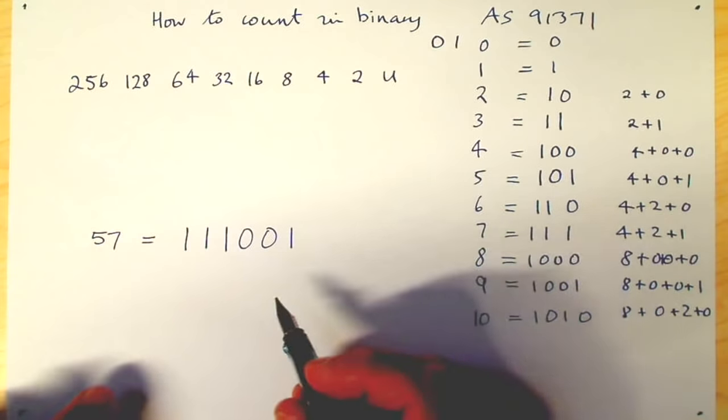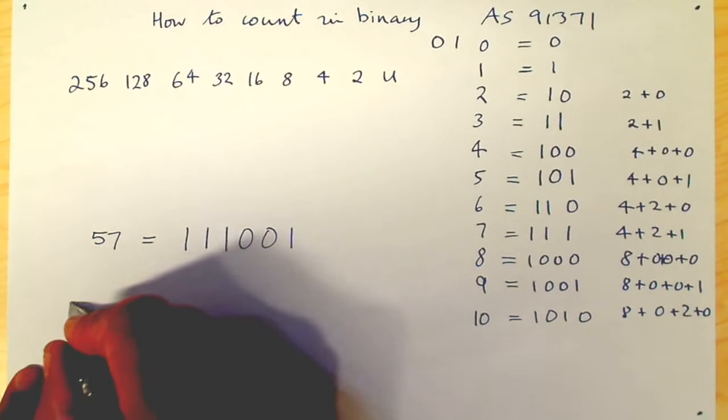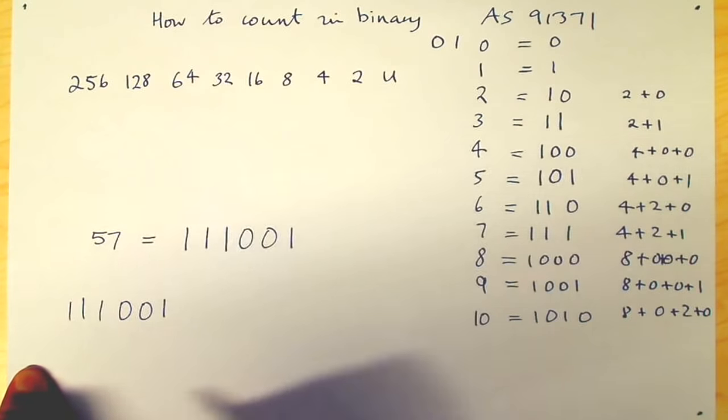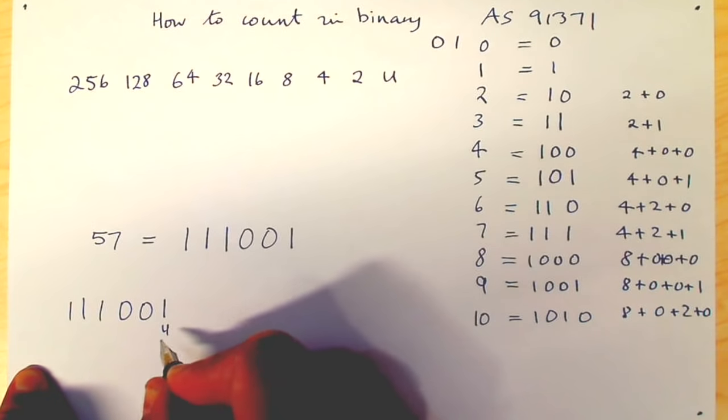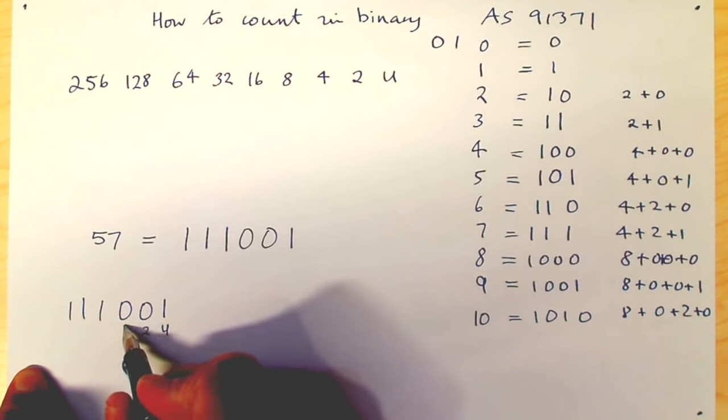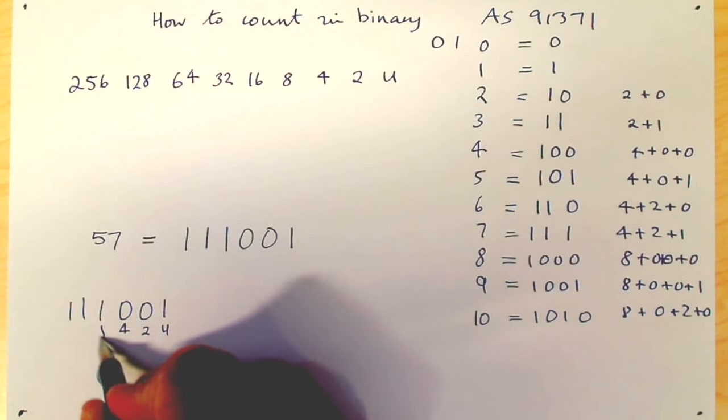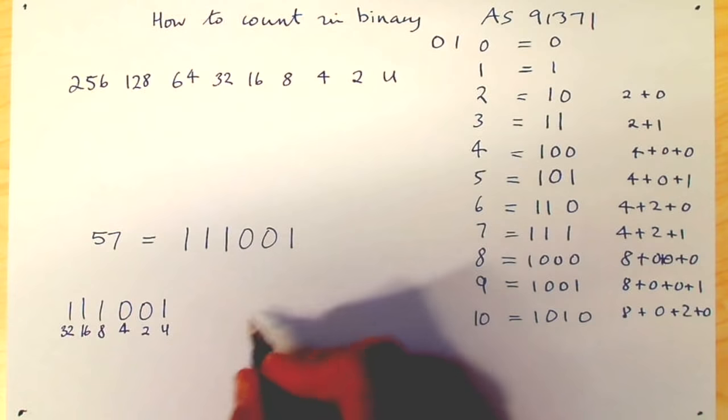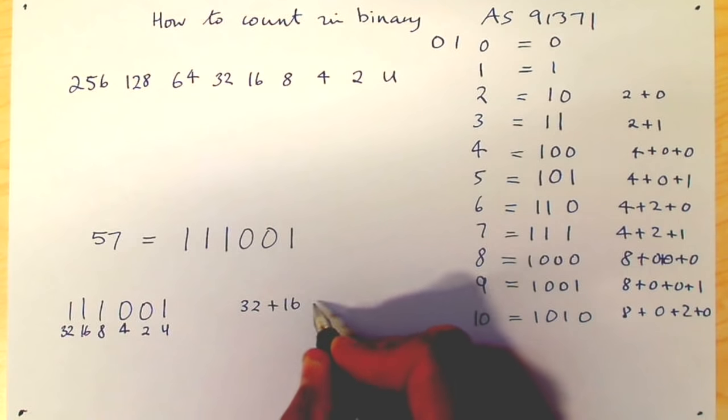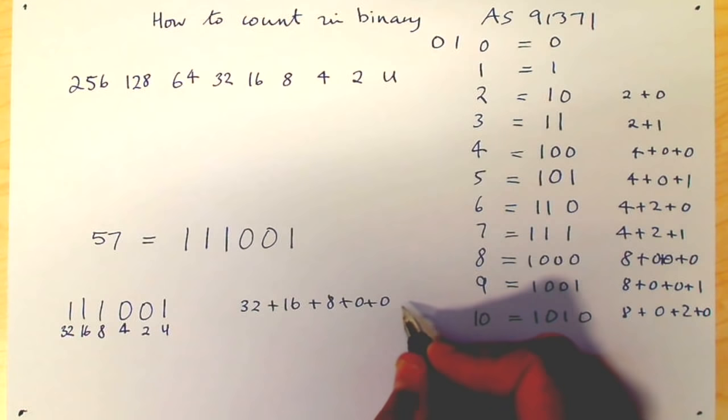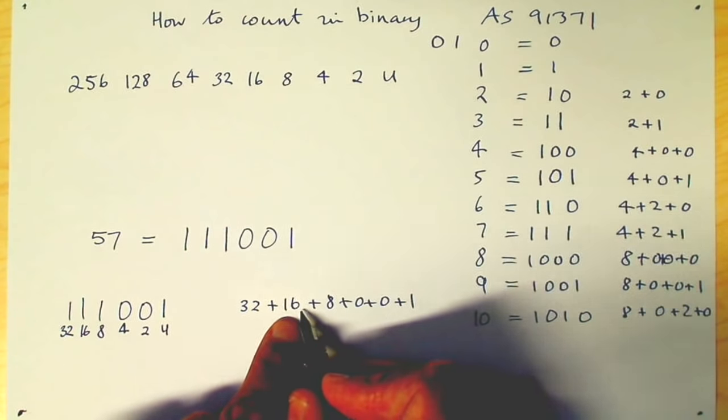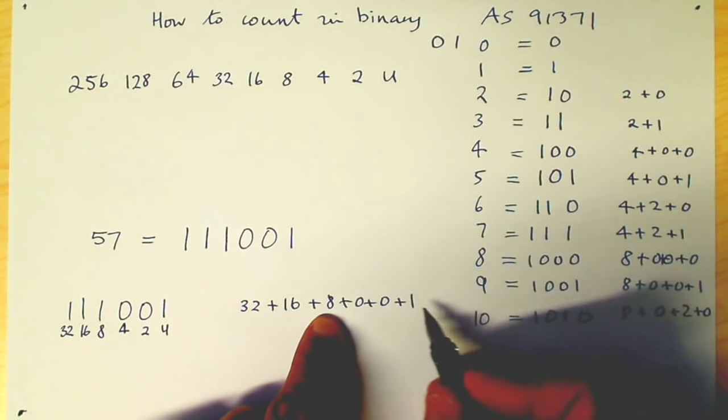So that should be 57. Let's double check. So we've got 1, 1, 1, 0, 0, 1. So we go units, 2s, 4s, 8s, 16s, and 32s. So we've got 32 plus 16 plus 8 plus 0 plus 0 plus 1. 32 and 16 is 48, 56, 57.